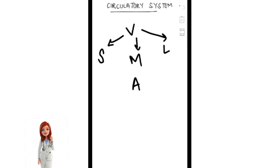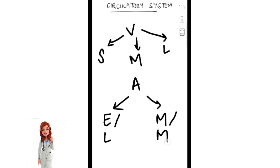Regarding the classification of arteries, there are two types: elastic arteries, which are the larger arteries, and muscular arteries, which are medium-size arteries. Examples of muscular arteries include those supplying the limbs — the brachial, radial, ulnar, popliteal, femoral, and so on.